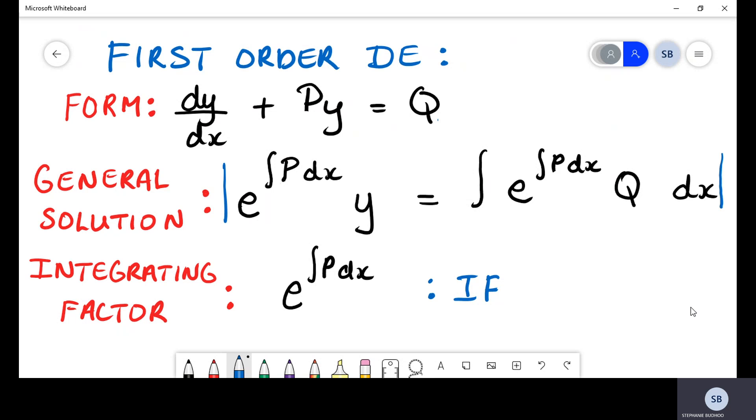For this first order differential equation based on your general solution, your integrating factor is given by e^(∫P dx). The values of P and Q come from your equation, so you have to do a short comparison to decipher what your values of P and Q are.